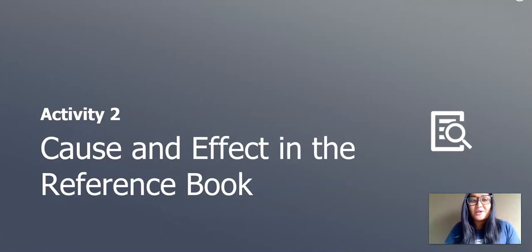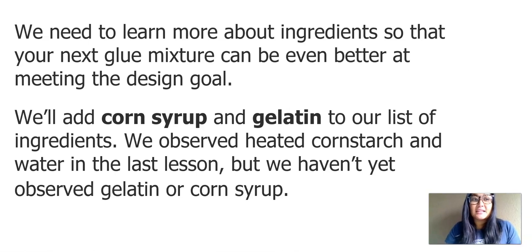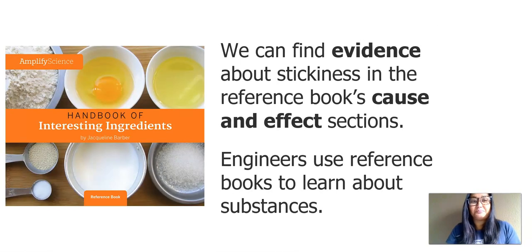The next activity of our lesson is we're going to look at cause and effect in our reference book. We need to learn more about ingredients so that our next glue mixture can be even better at meeting the design goal. We'll add corn syrup and gelatin to our list of ingredients. We observed heated cornstarch and water in the last lesson, but we haven't yet observed gelatin or corn syrup. You can find evidence about stickiness in the reference book's cause and effect sections. Engineers use reference books to learn about substances, so we're going to look at this book — Handbook of Interesting Ingredients.